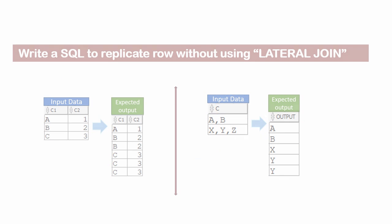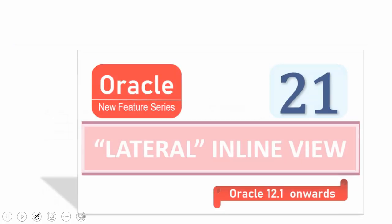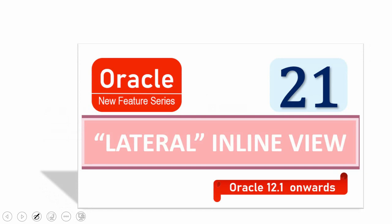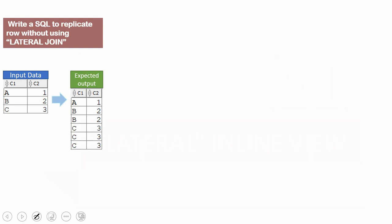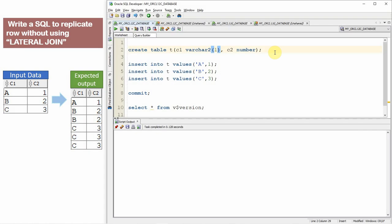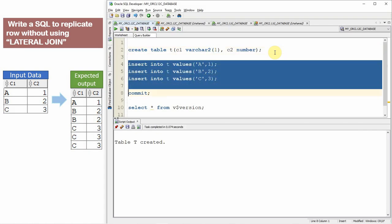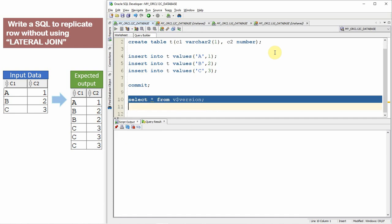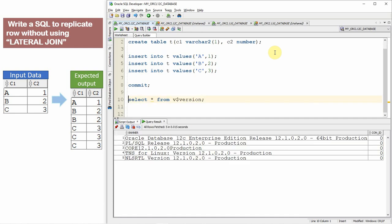Since I have already explained how the lateral join works, I would suggest you watch that video to get basic information about lateral join, because we are going to implement the same functionality without using it. Let us start with the example. First I will show how to implement with lateral join, then we will implement the same thing in version 11, where the lateral keyword is not supported.